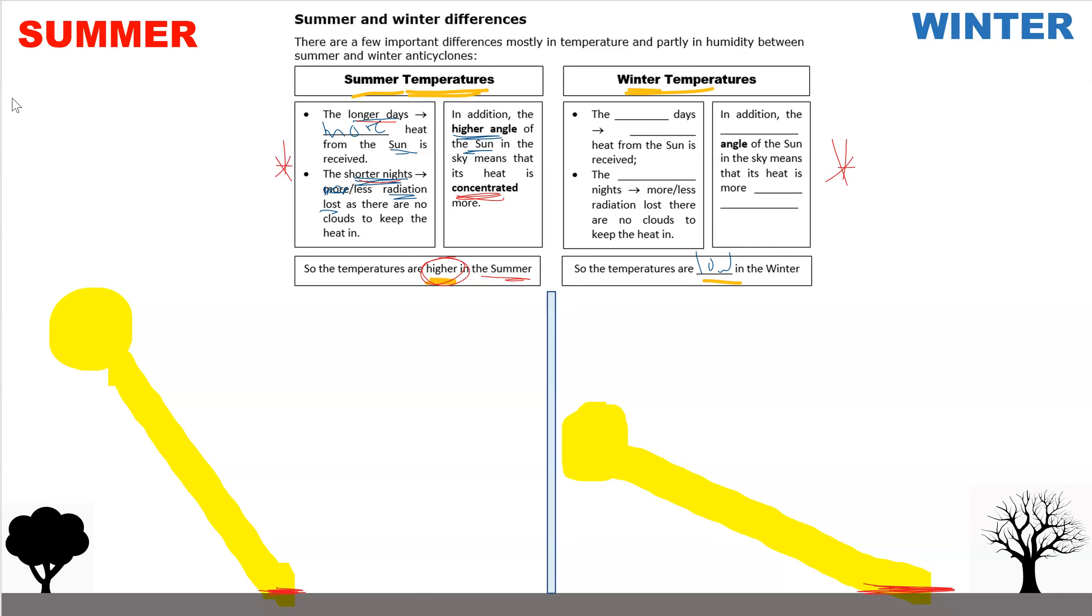Right, let's check over. If in the summer, you've got longer days, in the winter, you've got shorter days. If the longer days mean that more heat is received from the sun, the shorter days means that less heat is received from the sun.